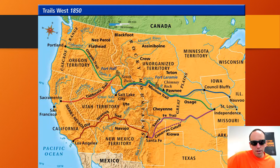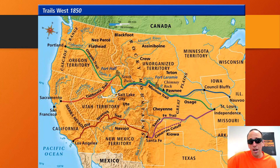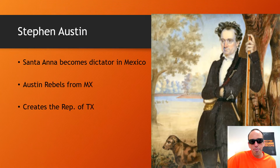Also, from Utah Studies last year, there was a little cutoff that comes down south of the lake. What's this little cutoff called? The Hastings Cutoff. Don't forget that.